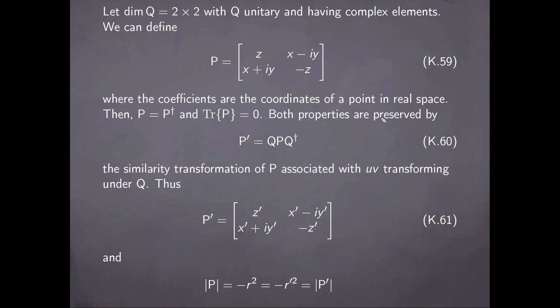Both of these properties are preserved by a similarity transformation, which is the transformation of P that is associated with the complex coordinates U and V transforming under the matrix Q. Thus, in order for the conditions here to remain satisfied, the transformed matrix P prime must have the structure here. And furthermore, due to the fact that the determinant itself is invariant to a similarity transformation, it follows immediately that this equality holds.